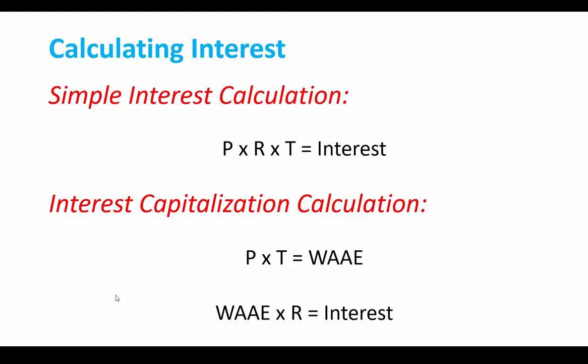When we're doing interest capitalization, it's kind of like we're doing the same thing, but we're doing it in a different way. When you're capitalizing interest, you're taking the principal times the time, and that's going to give you something called weighted average accumulated expenditures. We're going to see those in our example. Then you multiply the weighted average accumulated expenditures times one or more interest rates in order to get your interest. So we're going to take our principal times our time, and the time is going to be a fraction of a year. We're going to add all those up. That's going to give us our weighted average accumulated expenditures. And then we're going to multiply the weighted average accumulated expenditures times one or more interest rates in order to get the interest that we capitalize, avoidable interest we're going to call it.